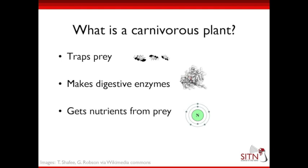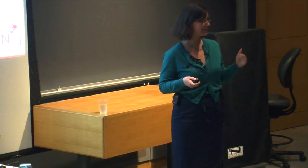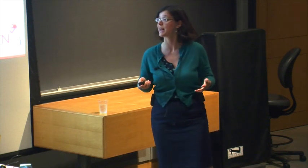The definition of a carnivorous plant is something that traps prey — mostly ants for pitcher plants — makes digestive enzymes, and gets nutrients from its prey. If it has all three of these things, it would be considered a carnivorous plant.